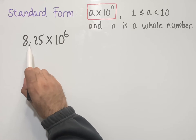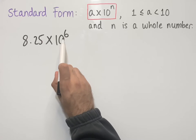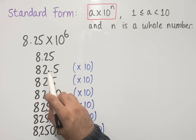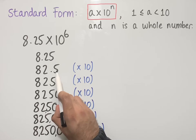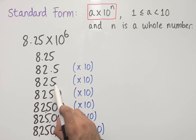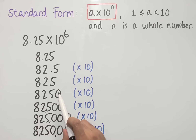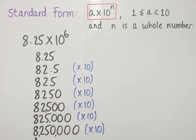This is telling us that we've got 8.25 and we're multiplying it by 6 lots of 10. We've got 8.25 times 10 which gives us 82.5. If we multiply that by 10 we get 825, then 8250, and if we carry on multiplying by 6 lots of 10 we end up with an answer of 8,250,000.